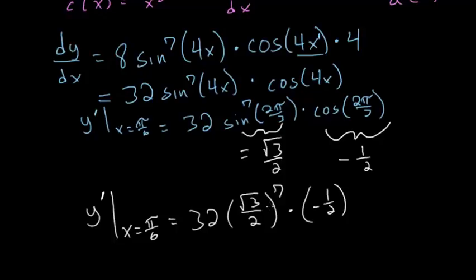So let's simplify a little. The 32 divided by 2 here becomes just 16, we'll put the minus out in front. And we have to raise this expression to the 7th power. So 2 to the 7th will be in our denominator, and it's multiplied by root 3 to the 7th power.